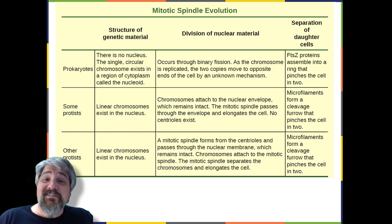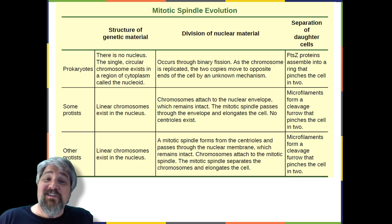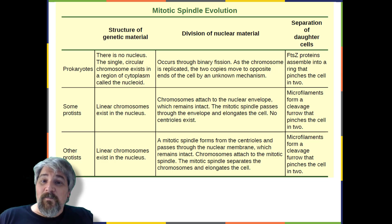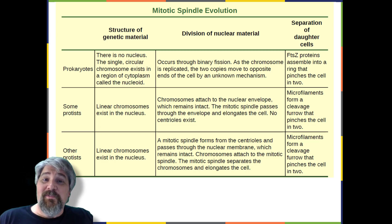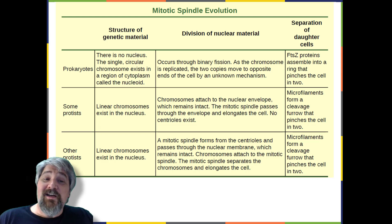FTSZ and tubulin are an example of homology — structures derived from the same evolutionary origin. FTSZ is presumed to be similar to the ancestor protein to both modern FTSZ and tubulin. While both proteins are found in extant (currently existing) organisms, tubulin function has evolved and diversified tremendously since the evolution from its FTSZ-like prokaryotic origin. A survey of cell division machinery in present-day unicellular eukaryotes reveals crucial intermediary steps to the complex mitotic machinery of multicellular eukaryotes.